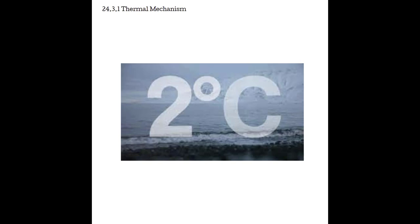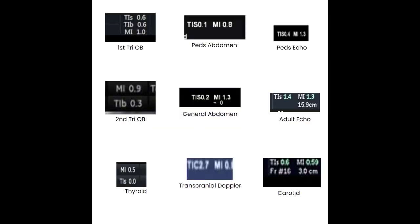For example, if the thermal index is indicated to be 1.0, then there is potential for an increase of 1 degree during the exam. If the thermal index is at 2.0, the exam is at the maximum recommended thermal indice and the exposure time should be limited. Here I have a bunch of examples from different presets and different exams showing the thermal indices indicated by the machine.